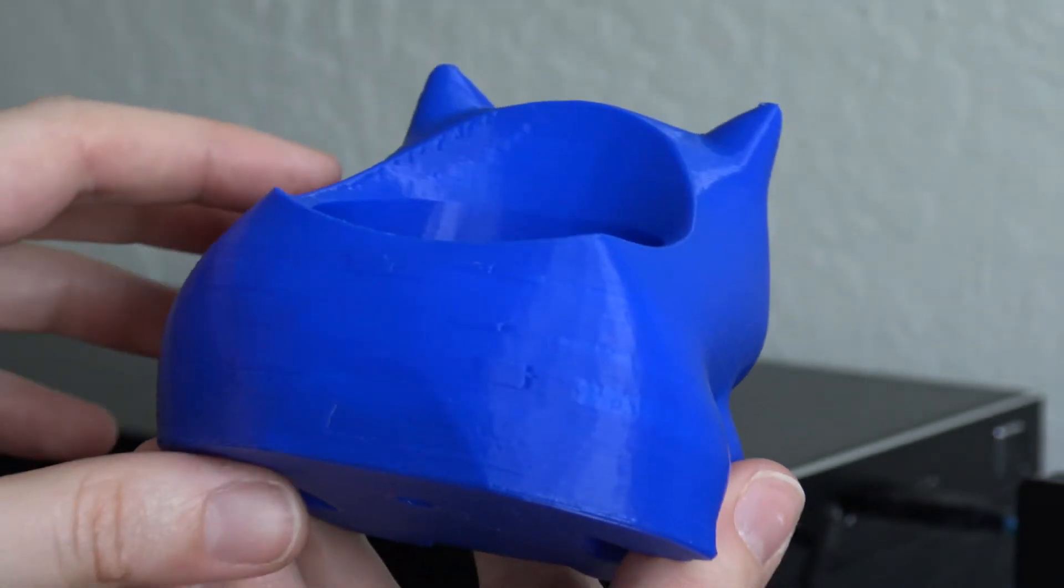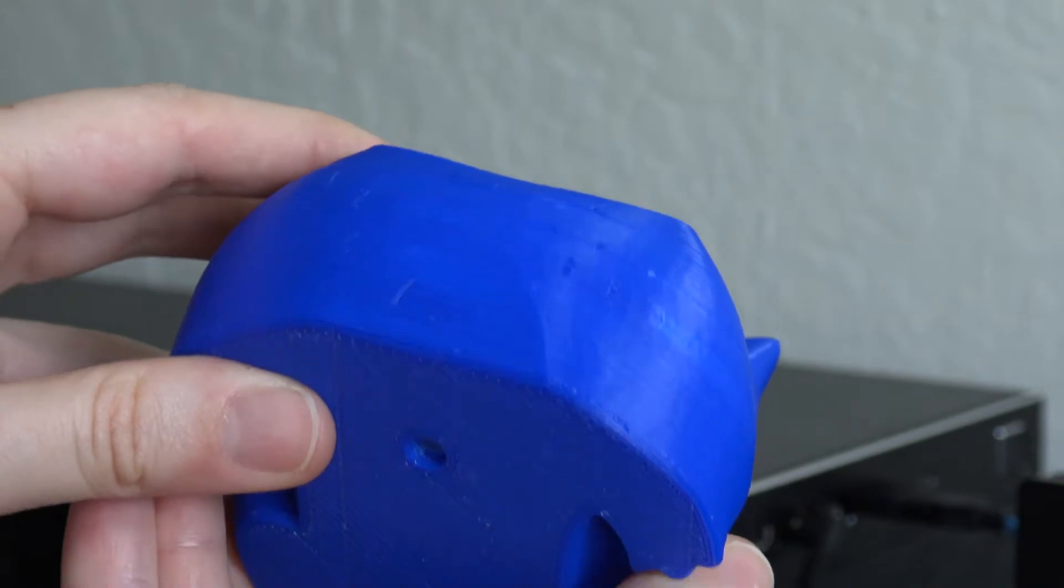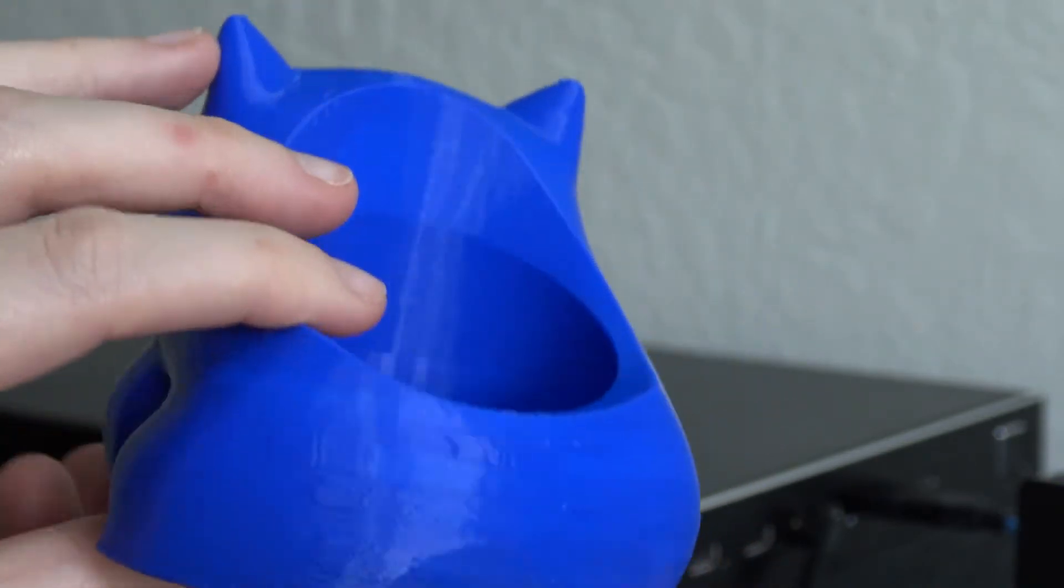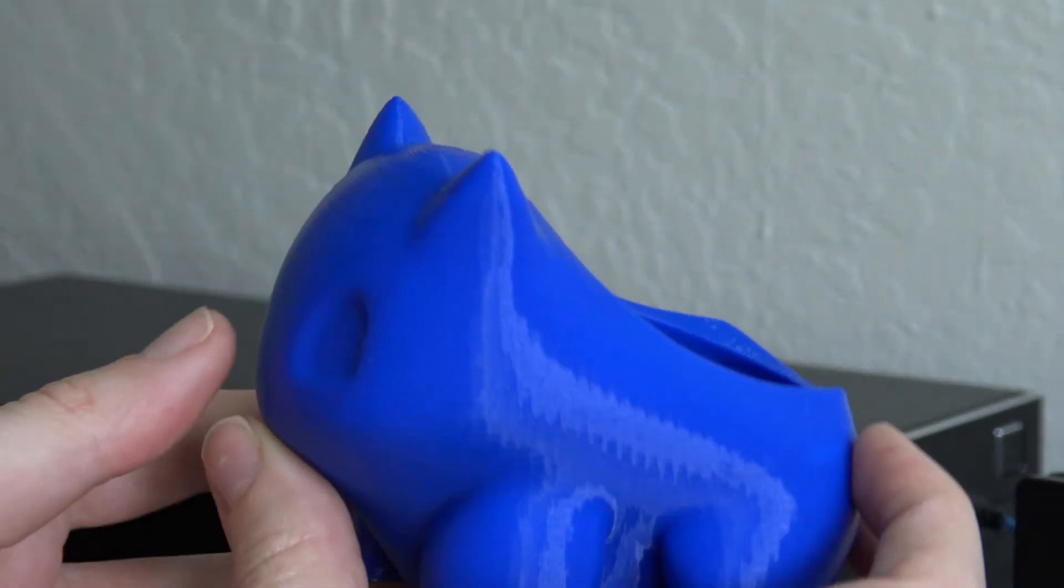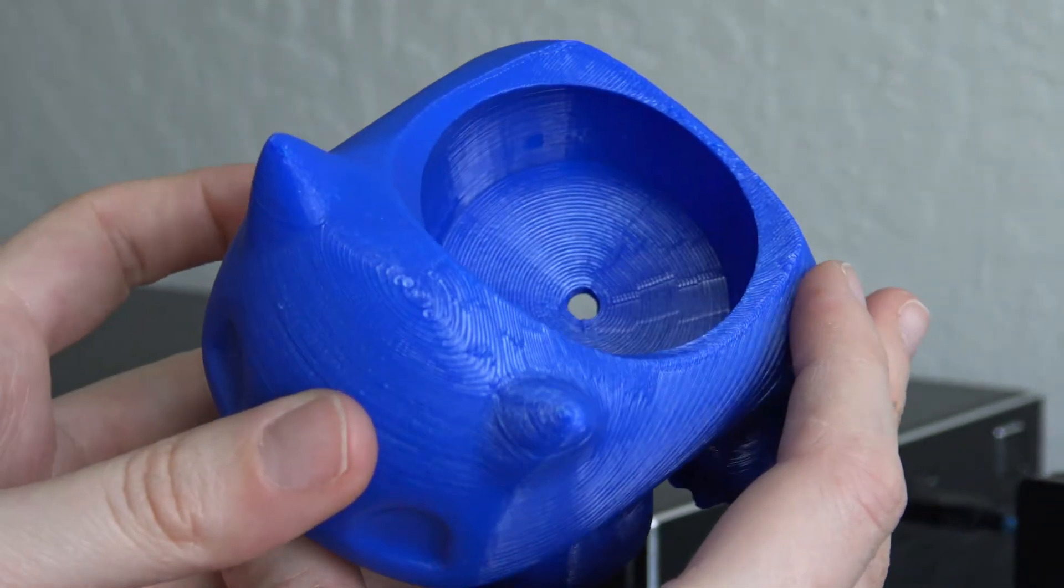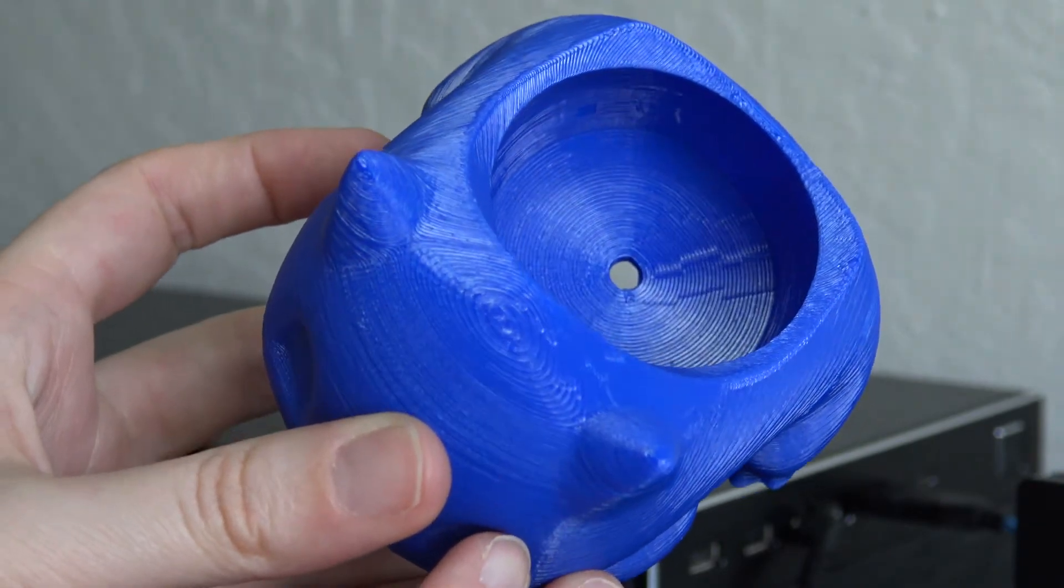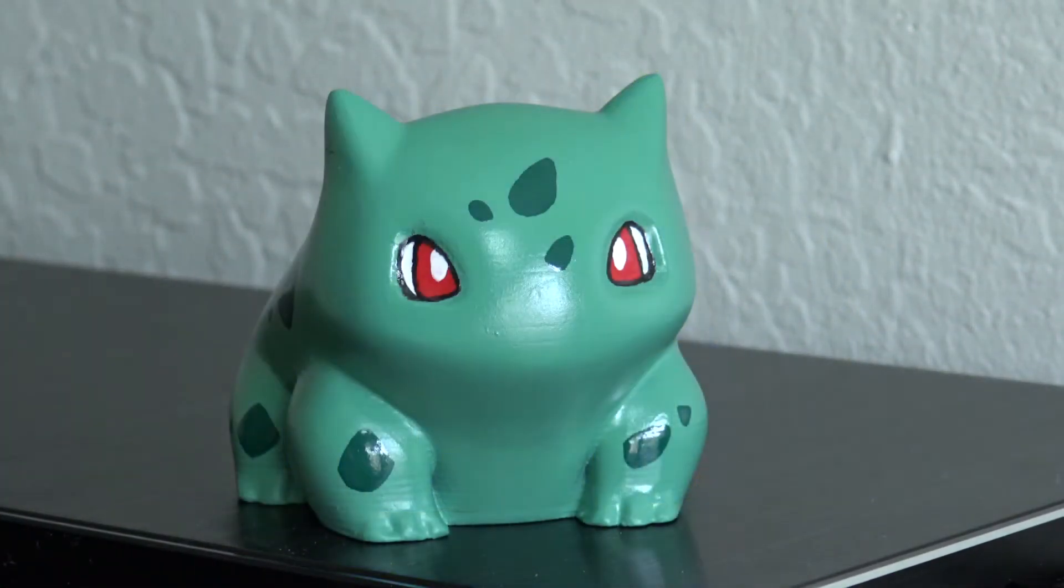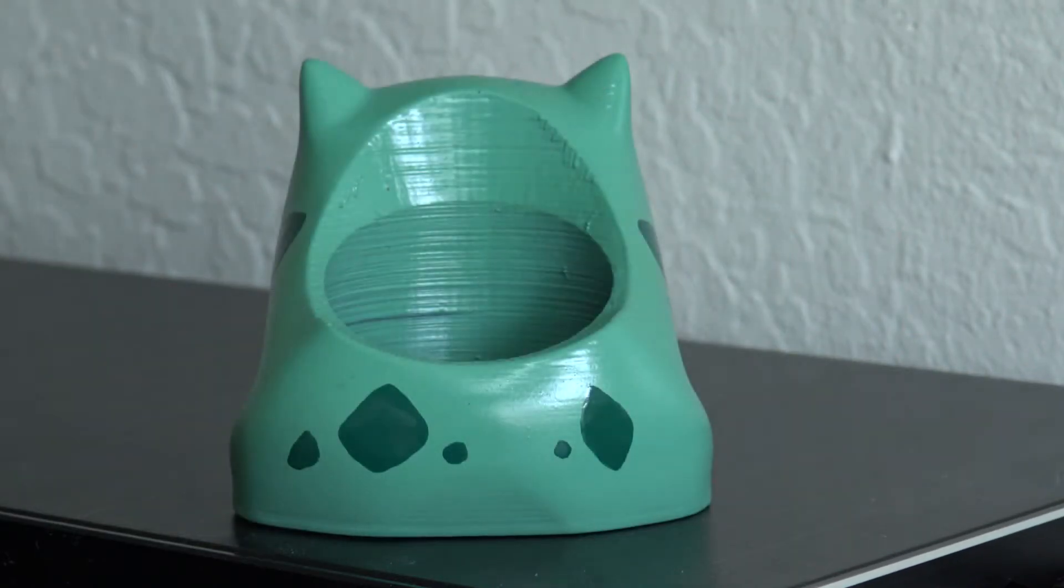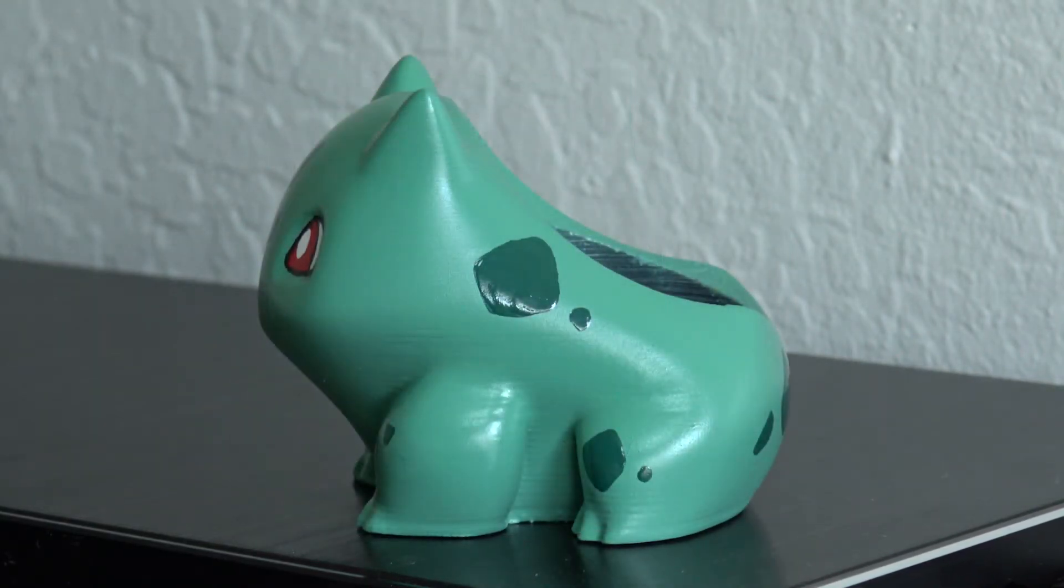After removing the imperfections by sanding and priming I could finally start to apply the paint. For the painting I used airbrush paint to paint all the large green parts you see in the statue. I hand painted all the smaller details like the eyes and the small dark green spots that Bulbasaur has in its body. And to finish I added a layer of varnish.